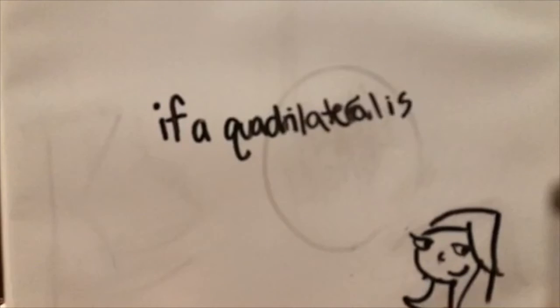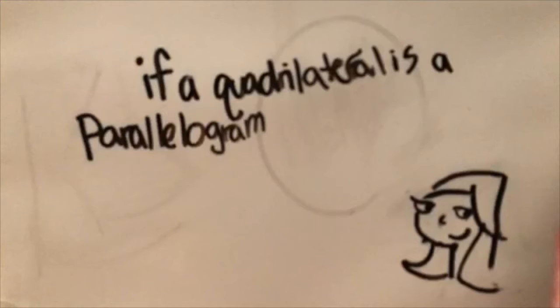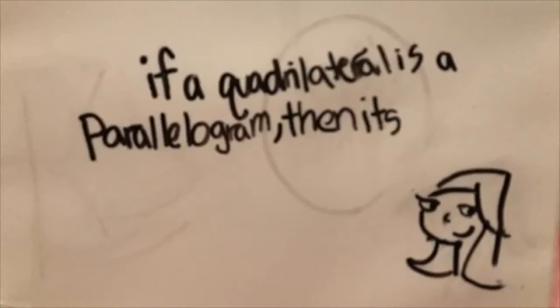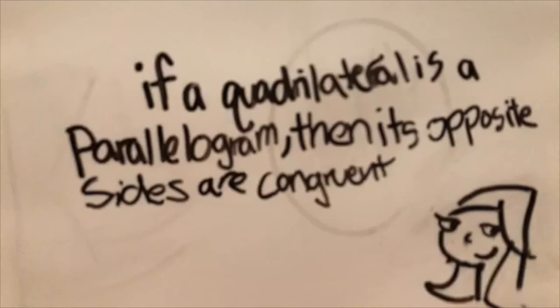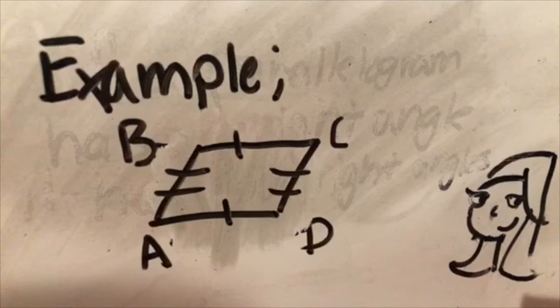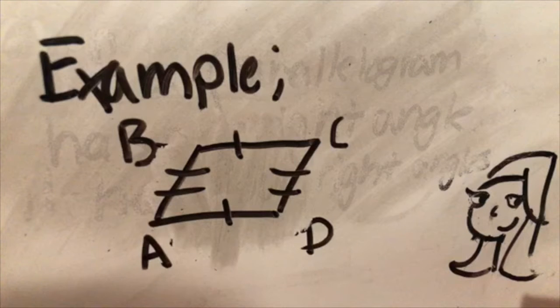If a quadrilateral is a parallelogram, then its opposite sides are congruent. So in parallelogram ABCD, side BC is congruent to AD, and BA is congruent to CD.